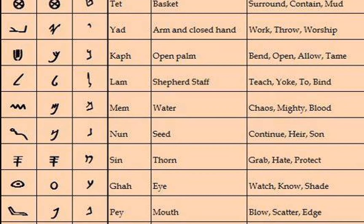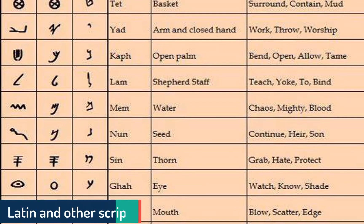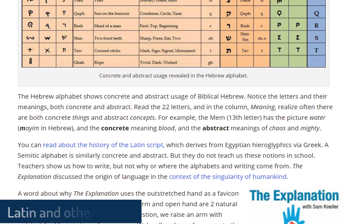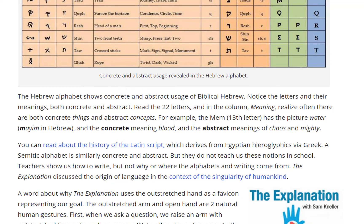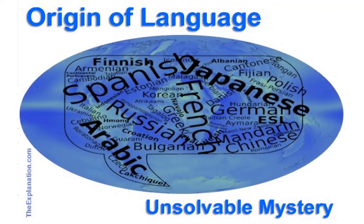You can read about the history of the Latin script, which derives from Egyptian hieroglyphics. A Semitic alphabet is similarly concrete and abstract, but they do not teach us these notions in school. Teachers show us how to write, but not why or where the alphabets and writing come from. The Explanation discussed the origin of language in the context of the singularity of humankind.